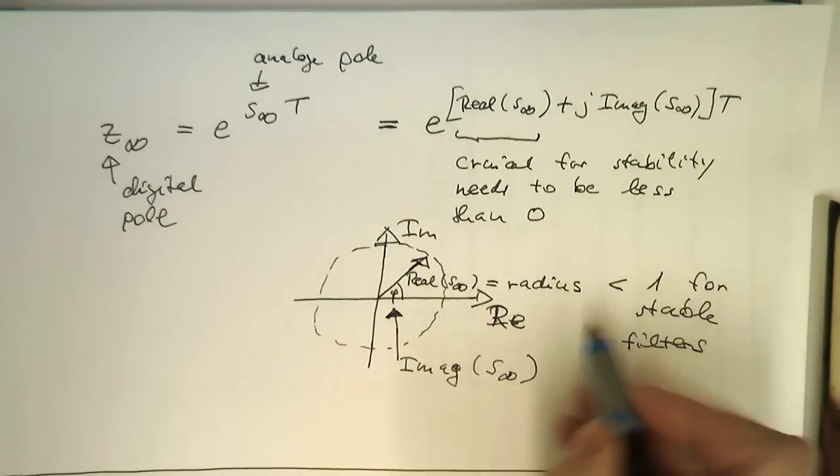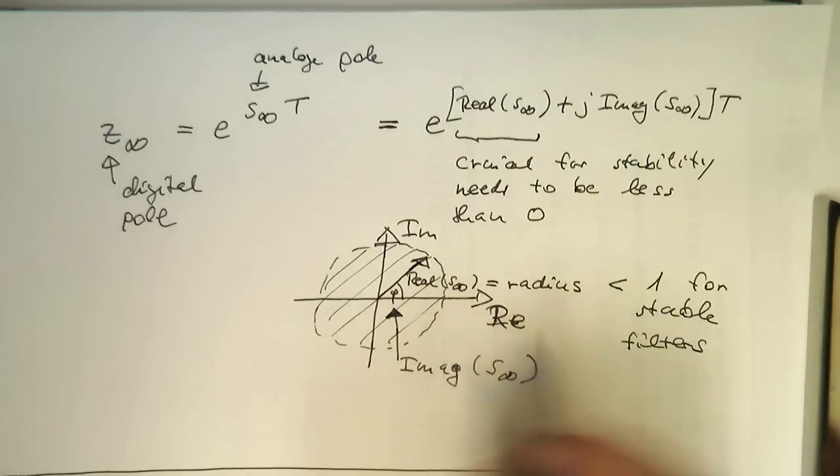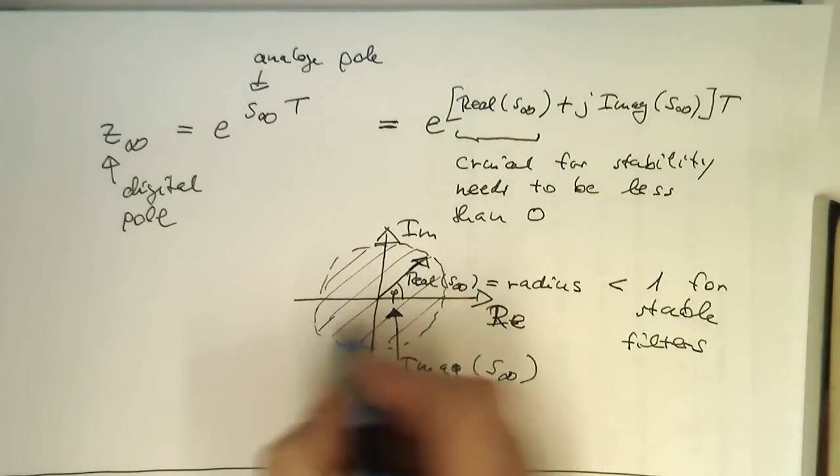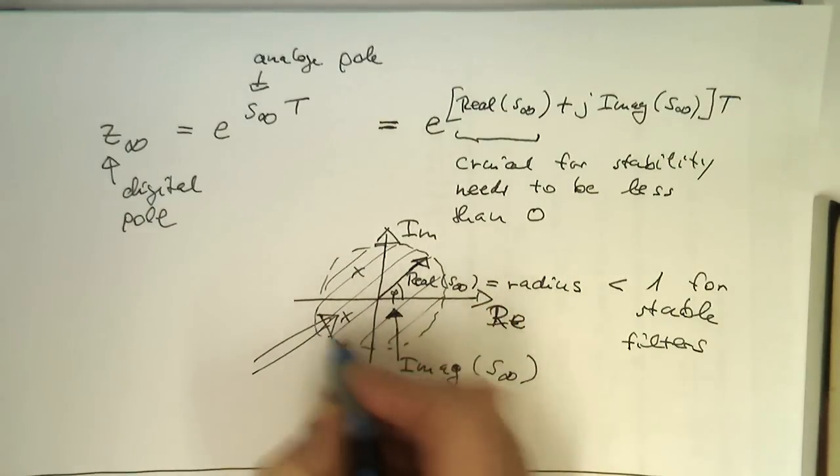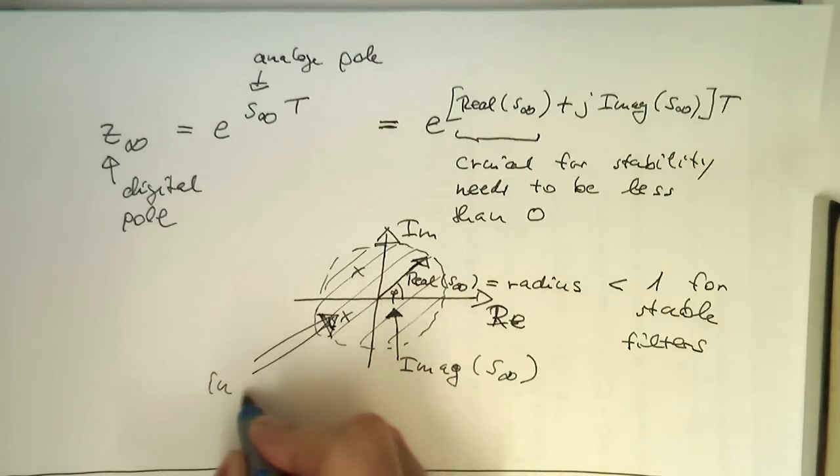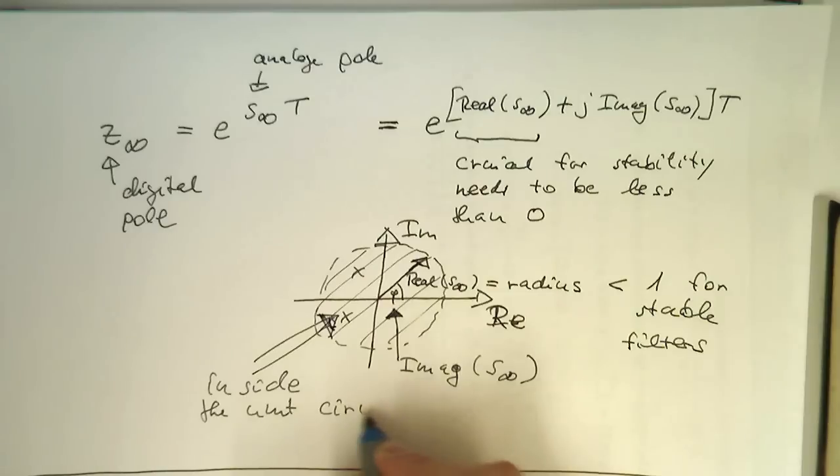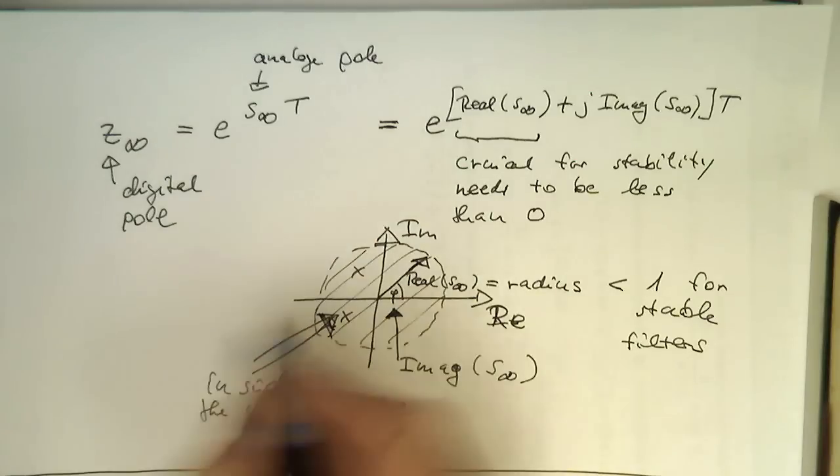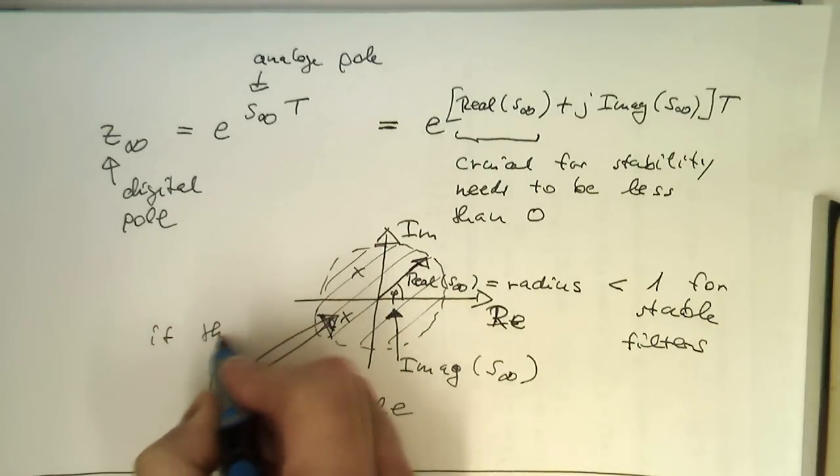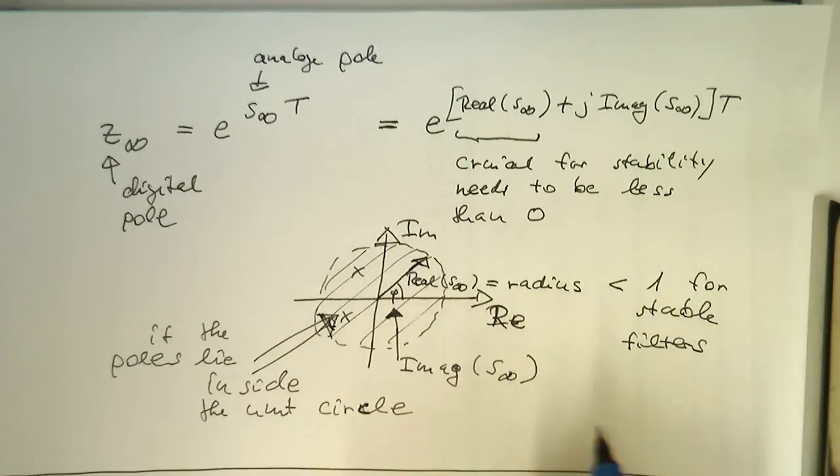If you say that the real part needs to be smaller than one, this means that this region here, this shaded region in a digital filter, is the region where the poles are stable. So essentially, inside the unit circle. If the poles lie inside the unit circle, then the system is stable.